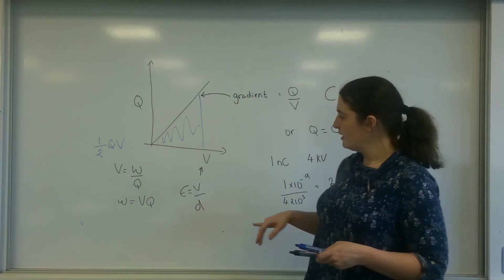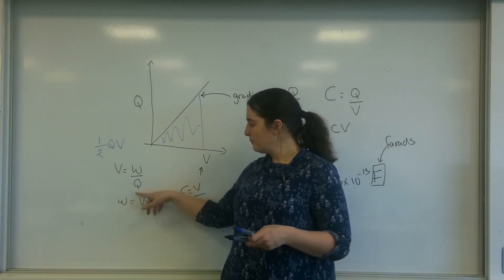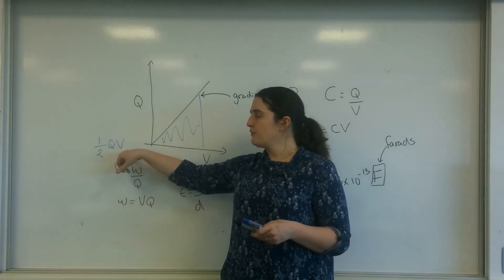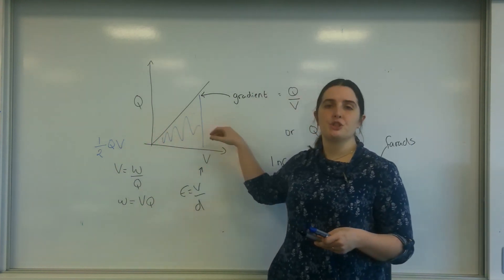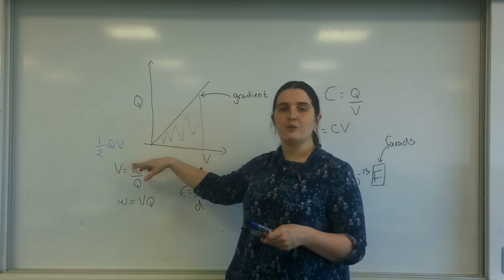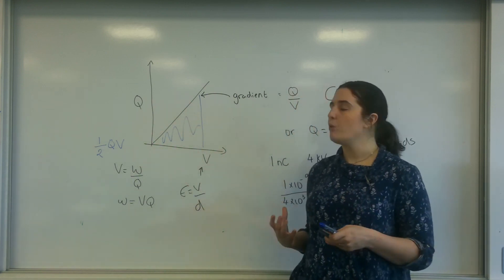And the reason it's a half QV—okay, so this is energy, potential times charge—however, the reason it's a half QV here is because the potential is changing and therefore the charge changes. So it's a ratio of the fact that two things are changing at once.